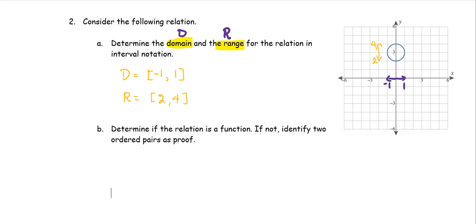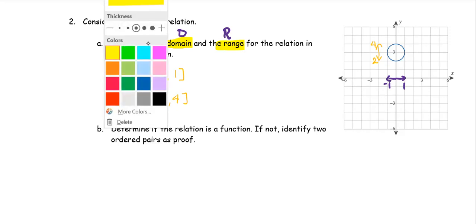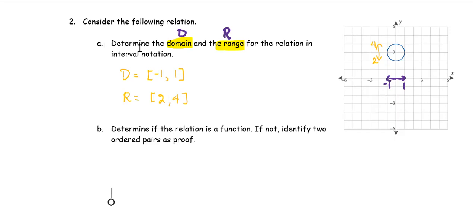Next, we determine if the relation is a function. If not, we identify two ordered pairs as proof. From the graph, we can use the vertical line test. If we draw any vertical line and it has more than one intersection point — as we see in this case with two intersection points — then it is not a function. For example, the ordered pair (0, 4) and the ordered pair (0, 2) lie on the same vertical line. We can use those two ordered pairs to verify that this relation is not a function.